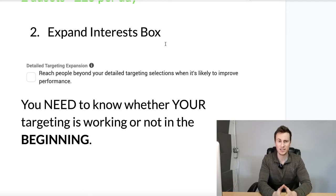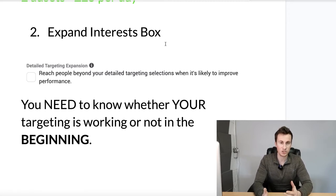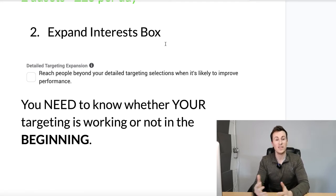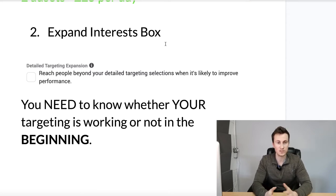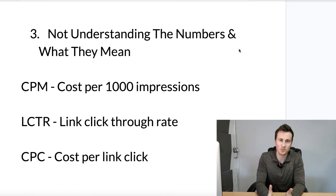It will cost you a lot more time and budget to optimize a pixel with an audience of 10 million people versus 100,000 people. The more specific you go, the higher quality your audience will be, the faster Facebook will learn, and the more optimized and matured your pixel will become. In the beginning, go for smaller audience sizes of under a million, try to get those 50 purchases minimum coming through your pixel to optimize it as quickly as possible, and then you can start being broader and more aggressive.